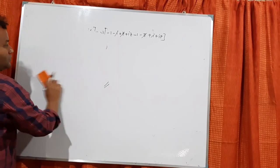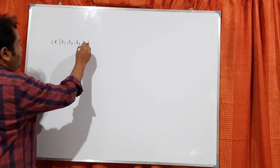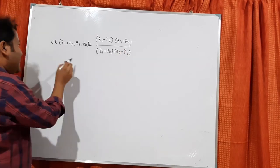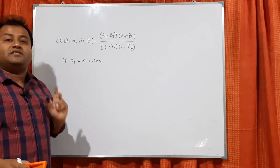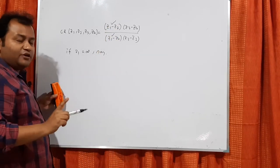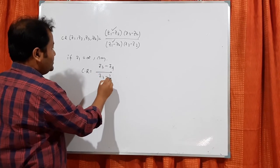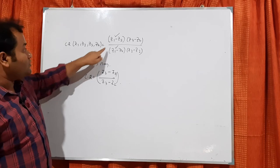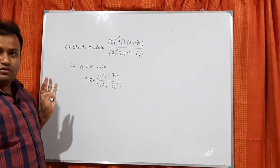One more thing: if any one of z1, z2, z3, z4 is infinity, then the terms containing that variable are treated as 1. For example, if z1 is infinity, the cross ratio formula has z1 in two terms — (z1 minus z2) and (z1 minus z4) — both become 1. So the remaining cross ratio reduces to (z3 minus z4)/(z3 minus z2). That is all for cross ratio.